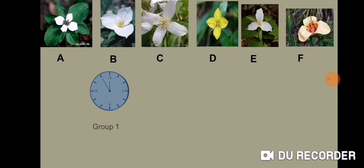Okay, the answer is group one: A, C and D. Look, A has four petals, C has four petals, and also D has four petals. Group two: B, E, F, they have three petals.